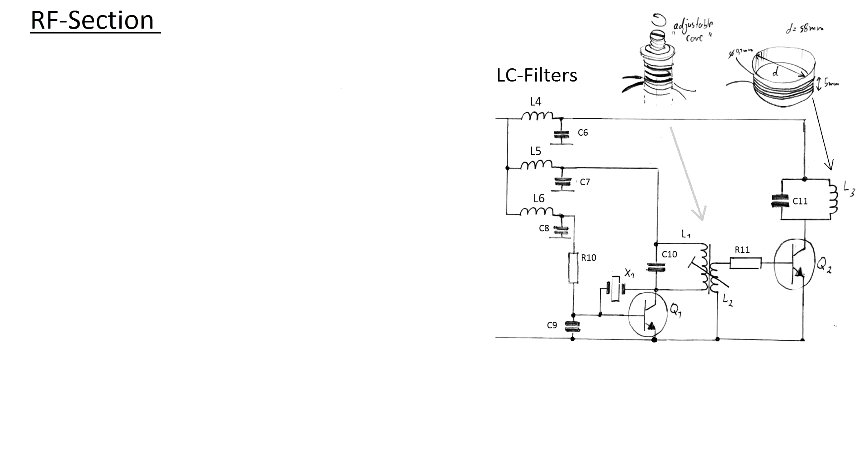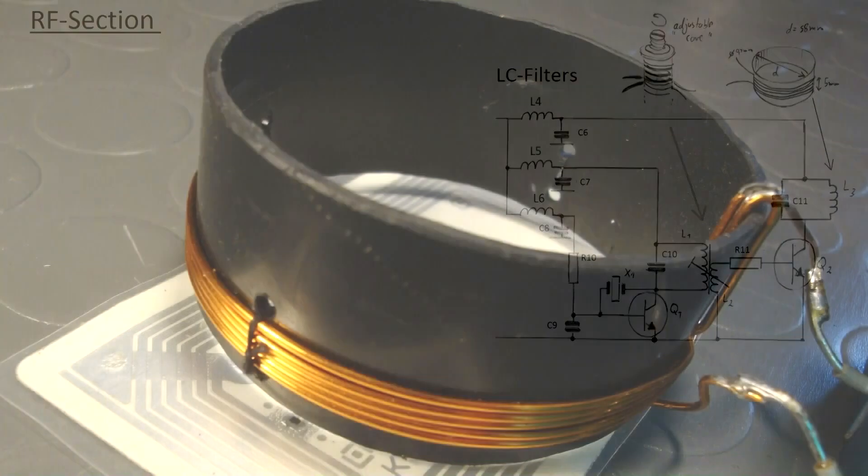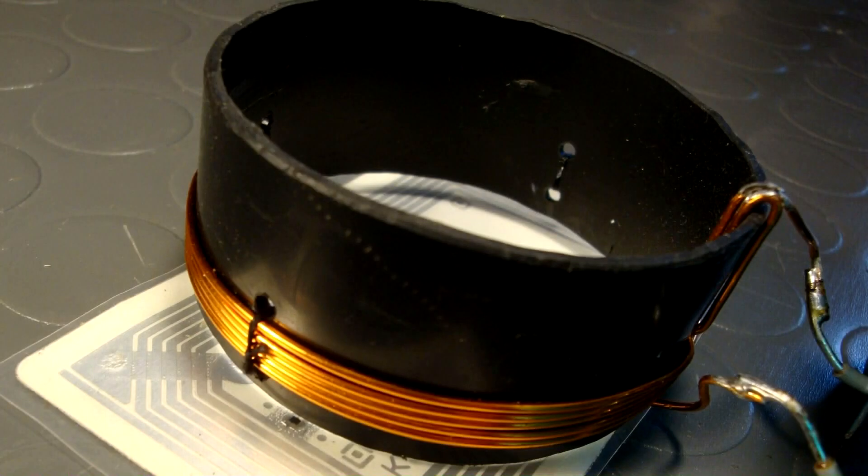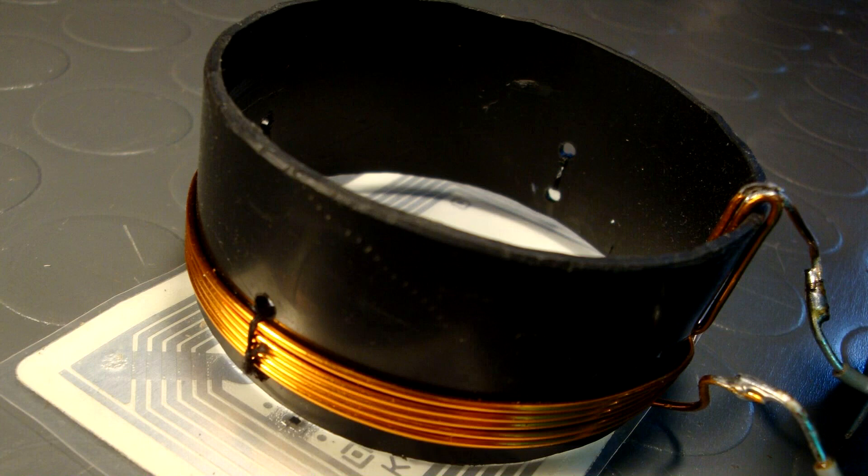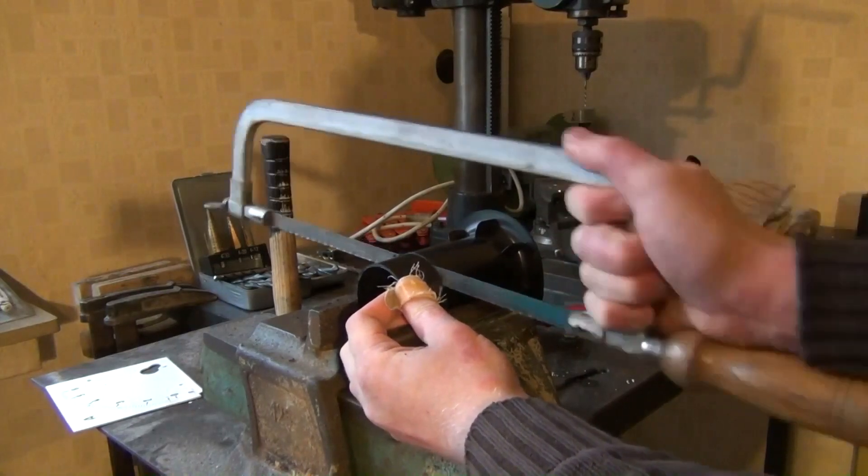We'll start with the RF section, which contains several inductive parts that need to be custom made. The first and most recognizable is the so-called detector coil. It's basically a solenoid of magnet wire supported by a bobbin, which is simply a section cut off a piece of plastic tubing.